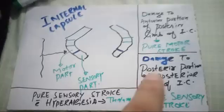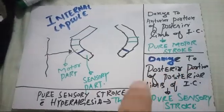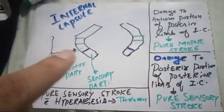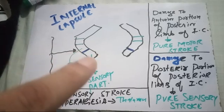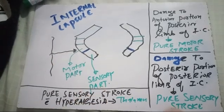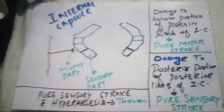Another MCQ: damage to the posterior portion of posterior limb of internal capsule — this is the posterior limb and this is the posterior portion — that will cause pure sensory stroke.